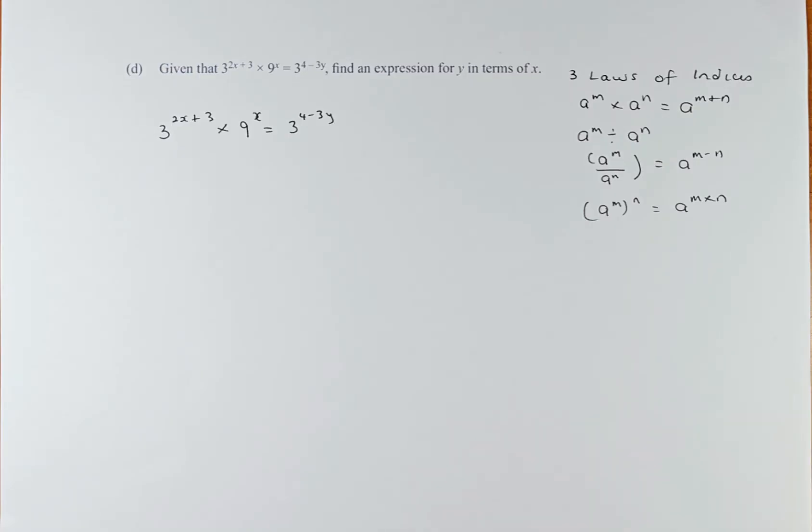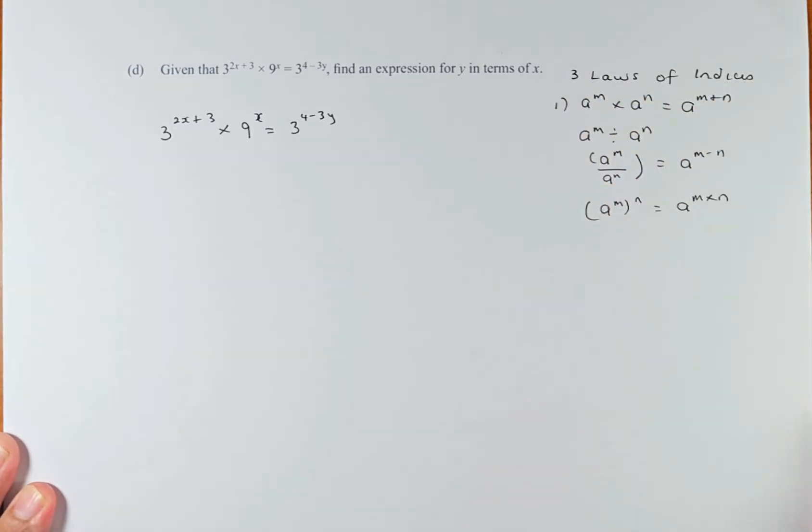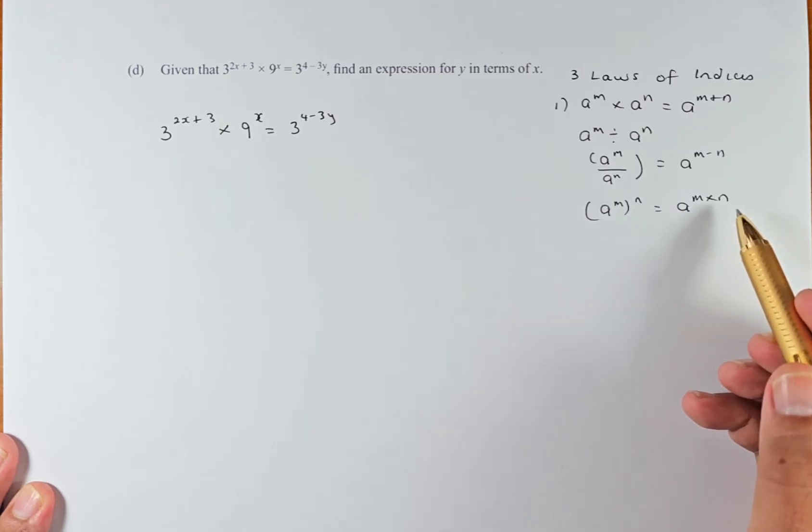Before we even do this question, you need to know the three laws of indices. The first one is a^m times a^n is the same as a^(m+n). If it's divided, it's going to minus them. If it's a bracket (a^m)^n, it's going to multiply: a^(m×n).